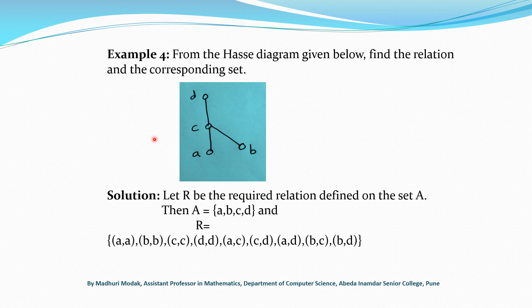Above A, C is present with a directed line segment from A to C, so A is related to C. Above C, D is present with a line segment, so C is related to D. By transitivity, A is related to D. Above B, C is present with a line segment, so B is related to C. By transitivity, B related to C and C related to D means B is related to D. From the Hasse diagram we can thus interpret the complete relation.